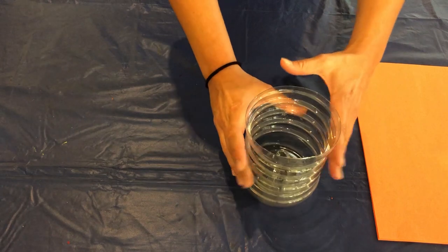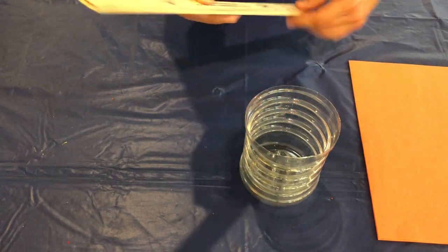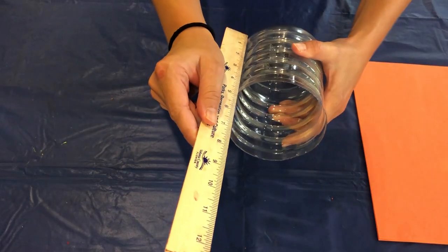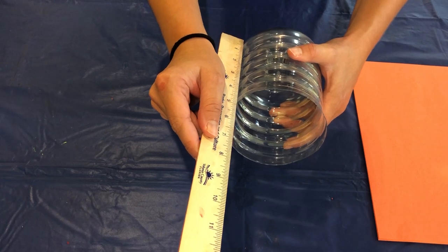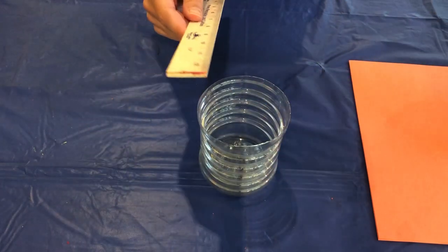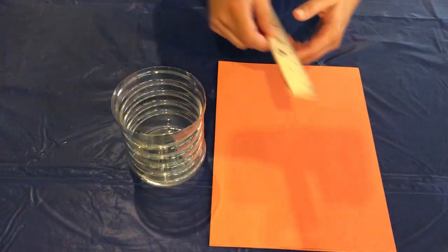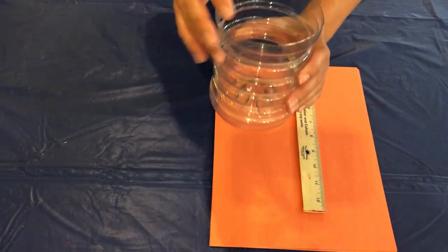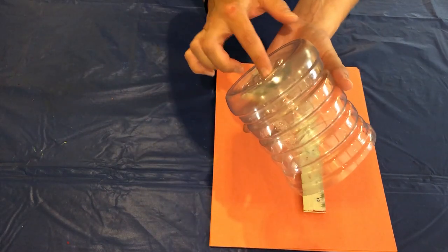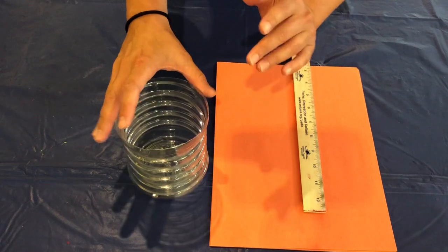Once your container has been cut, go ahead and measure the length of your container so you know how long to make your strips. And keep in mind if you're using a bottle it might have a raised center, so make sure you keep that in account when you're measuring.